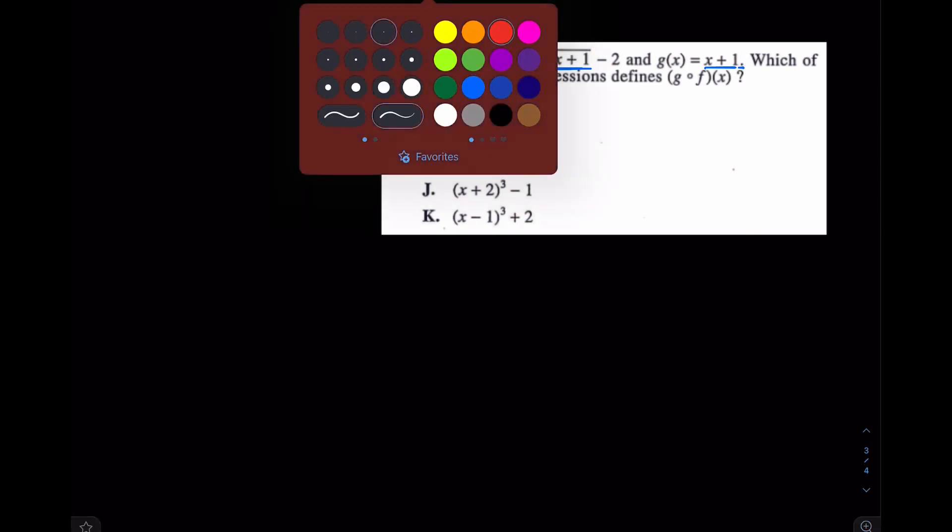Well, if that's G of X, which piece is F of X? That's the crux of this question. We need to find what F of X is. Well, if this is G of X, I think all the other stuff, really I'll do it in red here, I think the cube root and the minus 2 is F of X. Really, it's going to be F of X equals cube root of X minus 2.